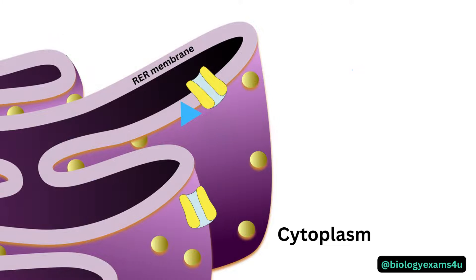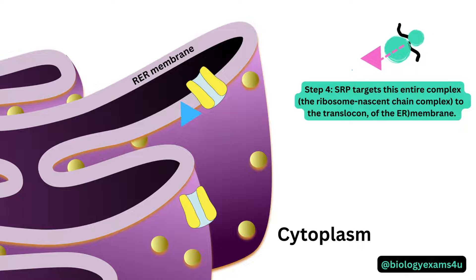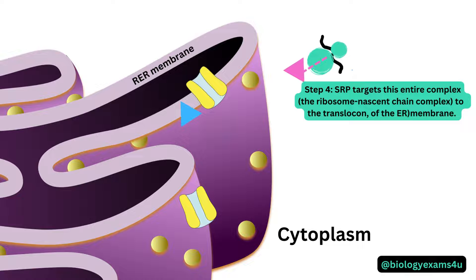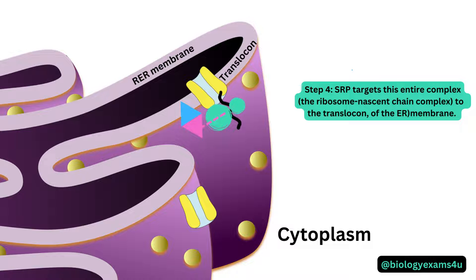Step four: the SRP targets this entire complex — made up of the ribosome, the nascent chain, and the polypeptide with the signal peptide — to the protein-conducting channel located on the ER, which is called the translocon. As you can see here, this is the translocon on the ER membrane.